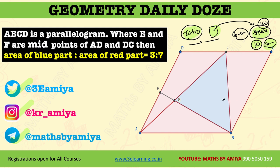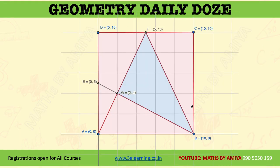Let's draw this parallelogram on the coordinate plane. I have taken A as the origin, B is (10, 0), C is (10, 10), D is (0, 10), F is (5, 10) as the midpoint, E is (0, 5) as the midpoint, and G is (2, 4). You can use the equation of a line and get the intersection using the slope-intercept formula.